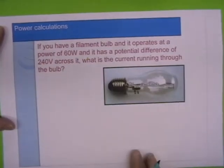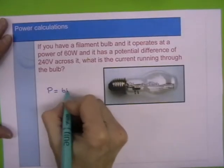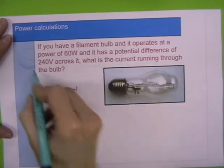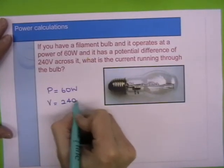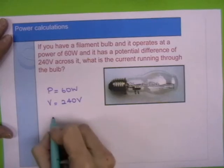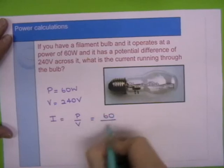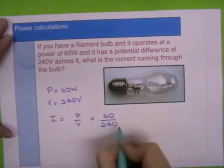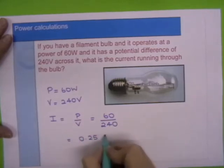Last question. If you have a filament bulb and it operates at a power of 60 watts and has a potential difference of 240 volts, what is the current running through the bulb? I equals P over V, which is 60 divided by 240, and that's 0.25 amps.